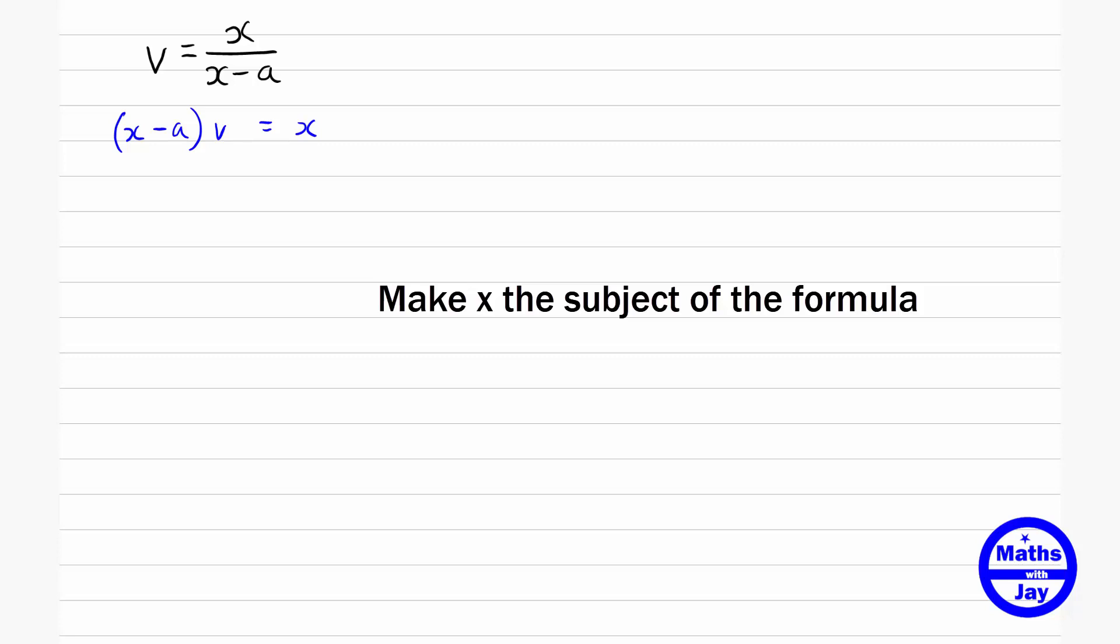And what we want to do is multiply out the brackets, so then we've got xv minus av equals x. So now the x is appearing twice but at least it's not in the denominator. What we want to do is bring the terms in x onto one side, preferably the left-hand side, and everything else onto the right-hand side.